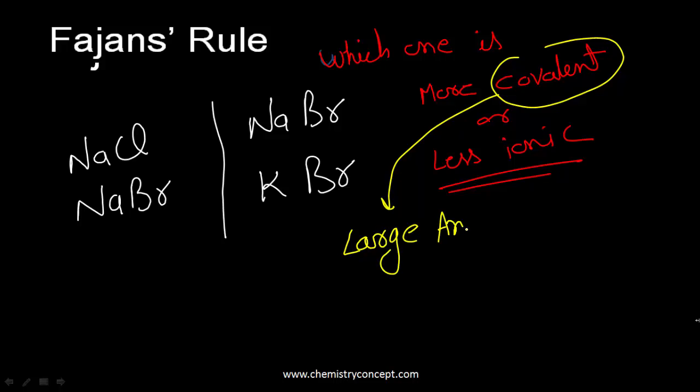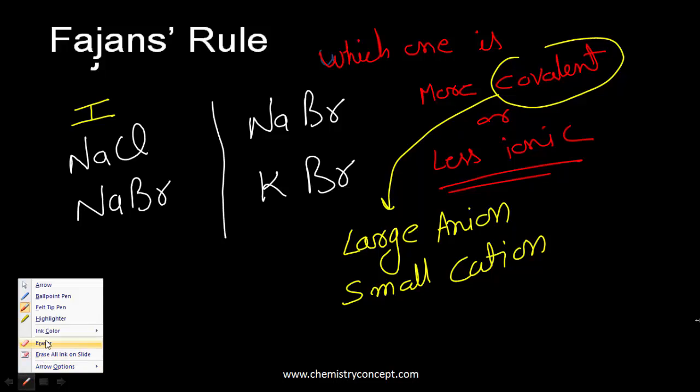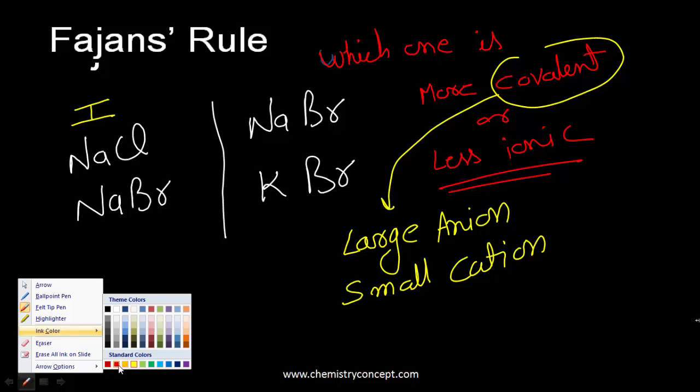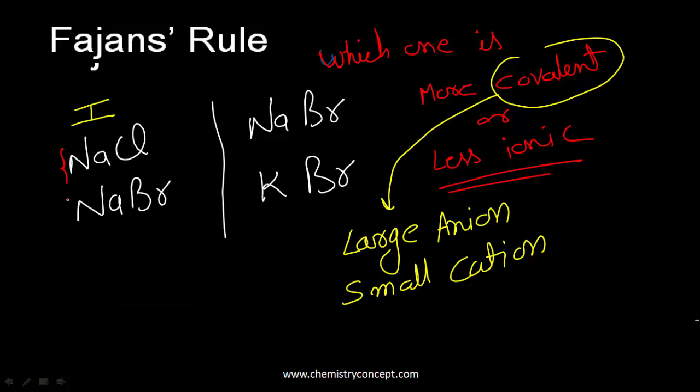Let's compare NaCl and NaBr. The cation is the same in both, so the covalent nature will depend upon the anion. The one with the larger anion would be more covalent. Since the radius of bromide ion is greater than that of chloride ion, as per Fajan's rule, NaBr is more covalent.